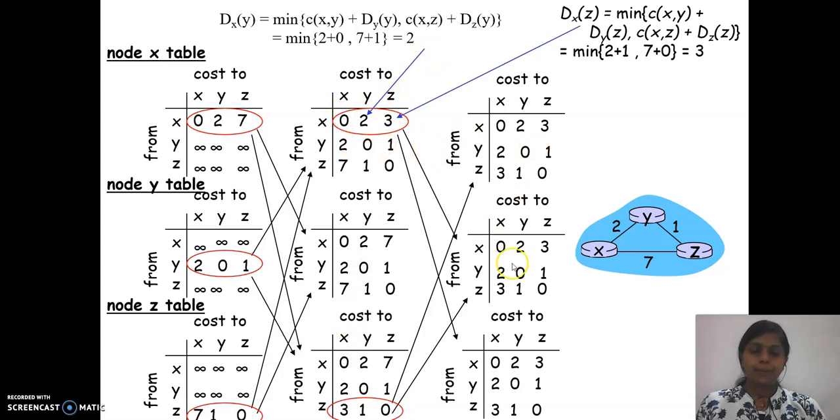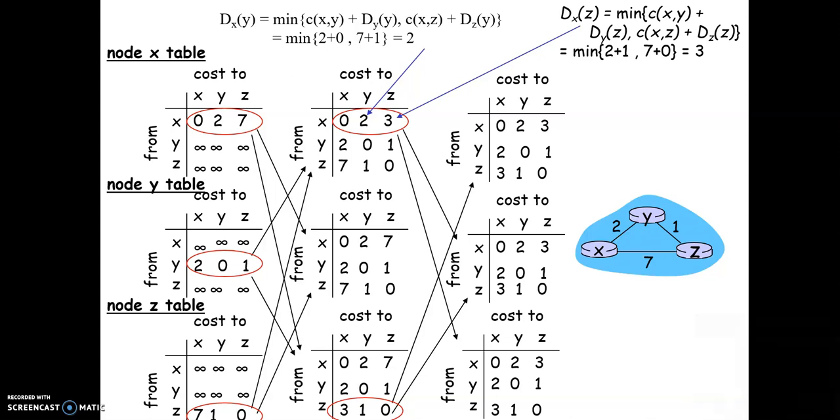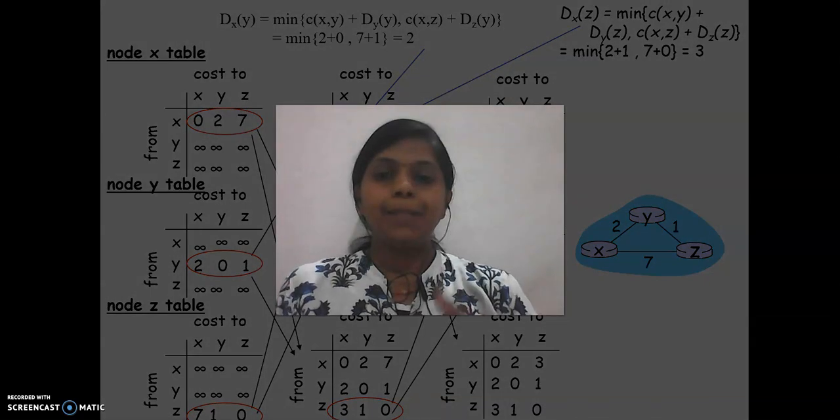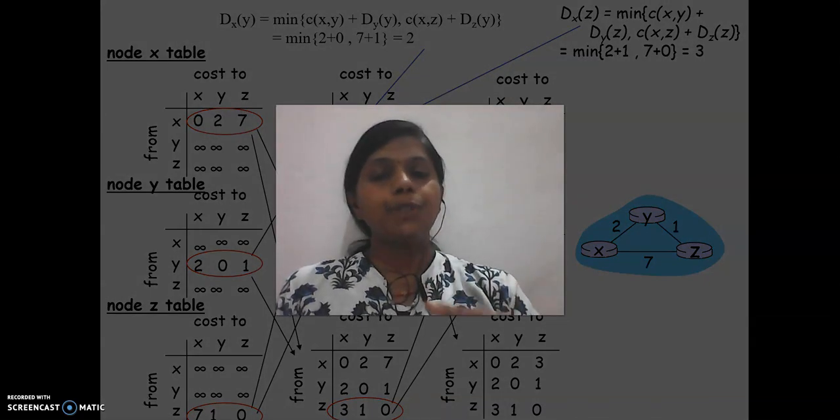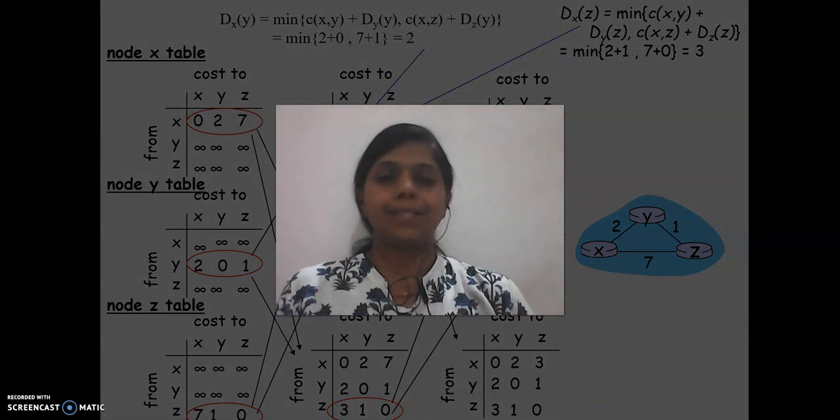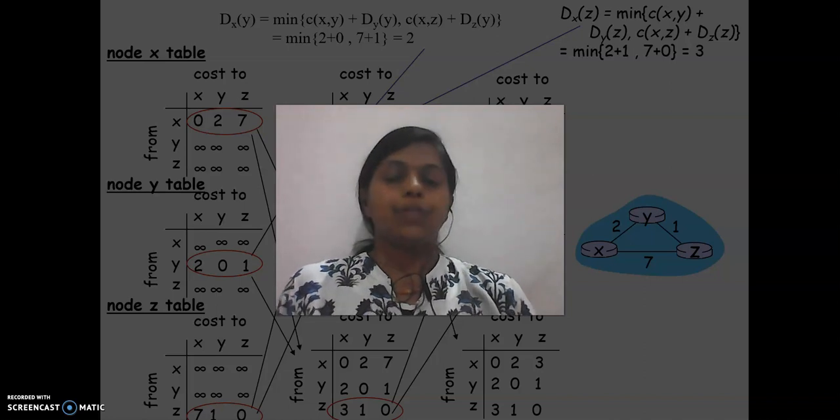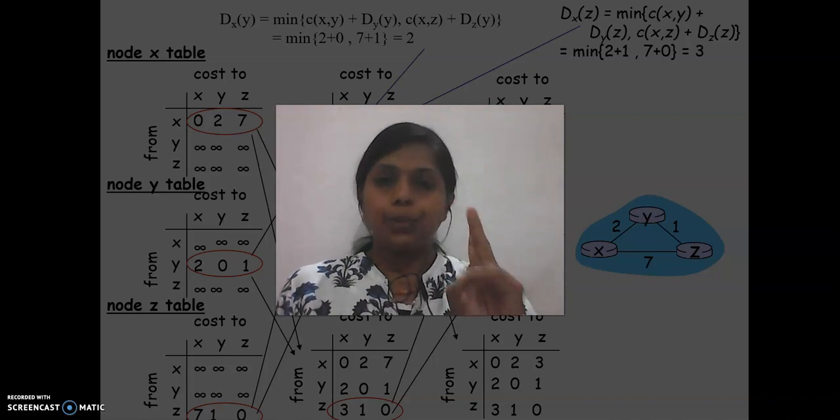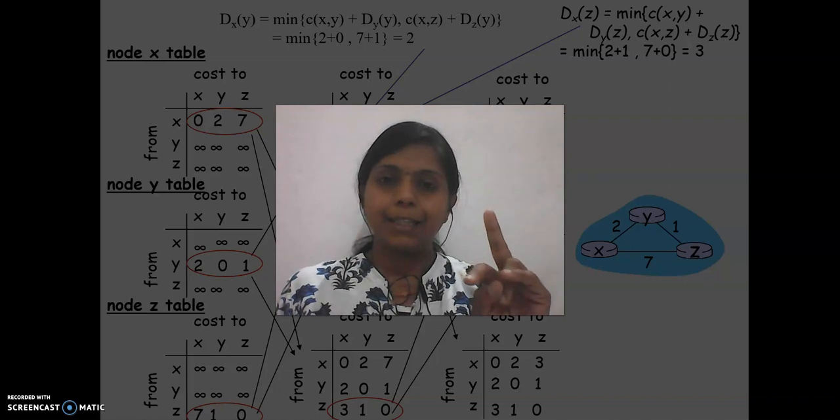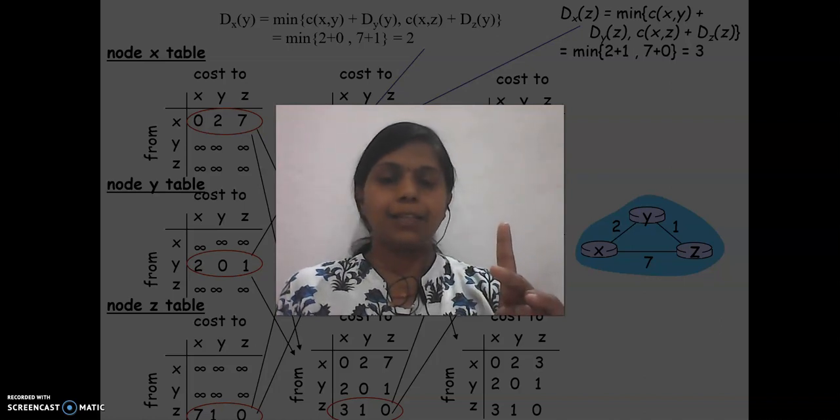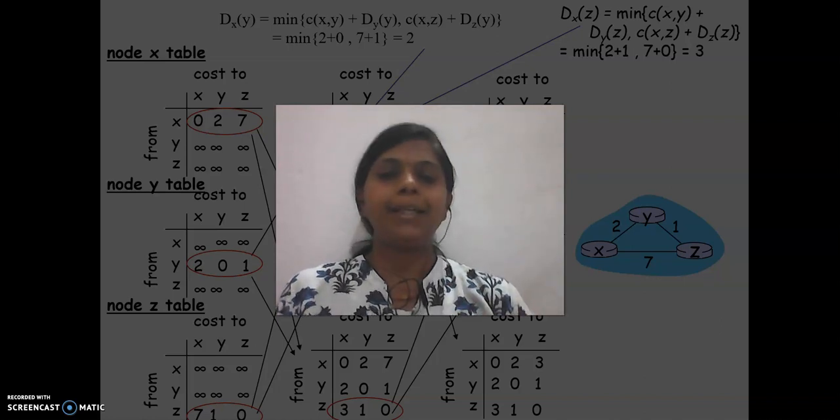Again, the information sharing takes place. It continues until there is no change. This is how Bellman-Ford equation is used for computing distance vector algorithm. So now, as I told you, there are two algorithms: link state algorithm and distance vector algorithm are basic fundamental algorithms.